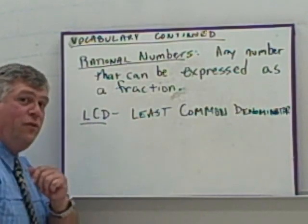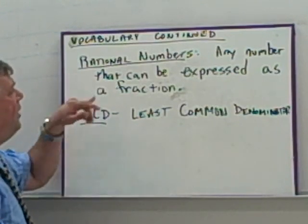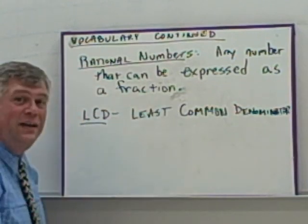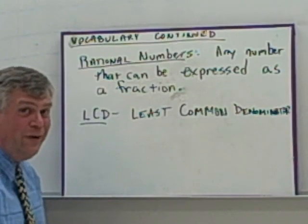Rational numbers. Rational numbers, we should already have this vocabulary from an earlier presentation, but rational numbers are any numbers that can be expressed as a fraction. Remember, to be expressed as a fraction, it cannot have zero as a denominator.